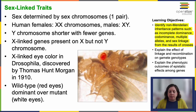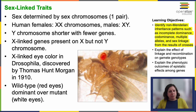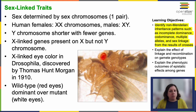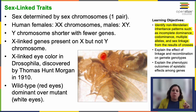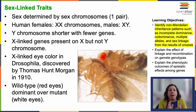Now let's talk about sex-linked traits. In humans, as well as some other animals and plants, gender is determined by sex chromosomes — one pair of non-homologous chromosomes. But not all species do it this way; for example, in turtles, temperature determines the gender of offspring. In addition to 22 homologous pairs of autosomes, genotypically female humans have a homologous pair of X chromosomes, and genotypically male humans have an XY — a non-homologous chromosome pair.